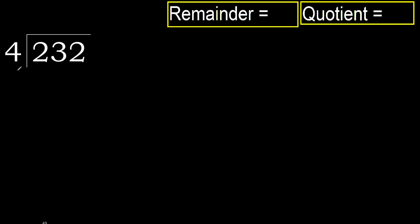232 divided by 4. 2 is less, therefore next. 23 is not less, therefore with 23: which number multiplied by 4 is nearest to 23 but not greater?